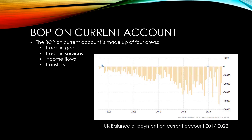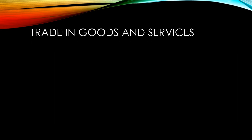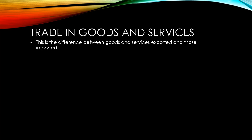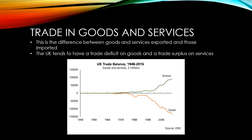In the UK it's been very common to have a deficit balance of payments for a long time, as you can see from this chart. The trade in goods and services refers to the difference between the amount of goods and services exported and the amount imported. The UK tends to have a trade deficit on goods and a trade surplus on services in recent years, as you can see in this chart.